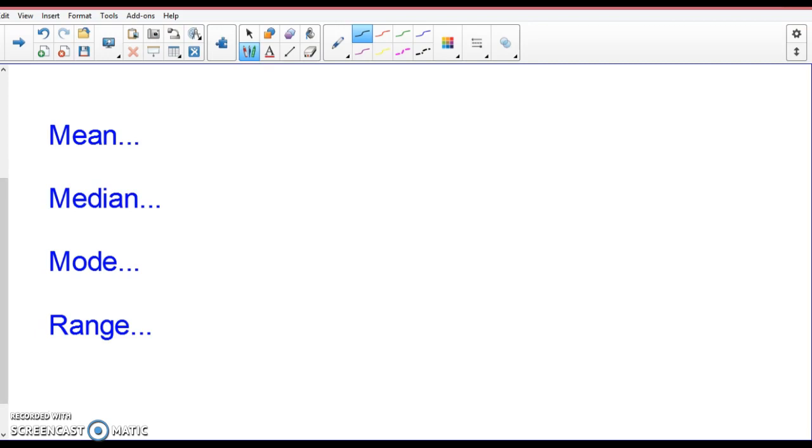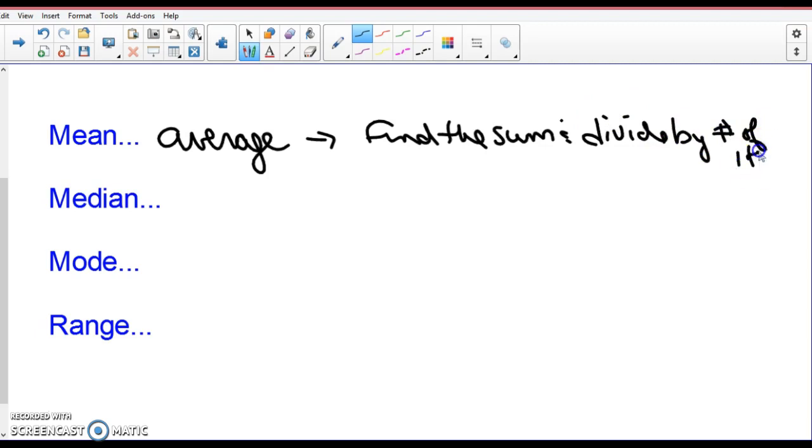Mean - what's another word for mean? Average. Mean and average are the same thing. Find the sum and divide by number of items. To find the average or the mean, you add up all numbers in question and you divide by how many there are.